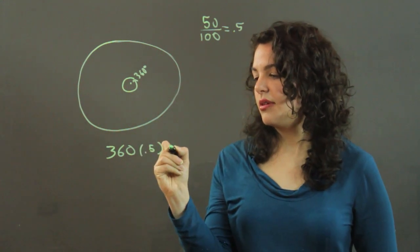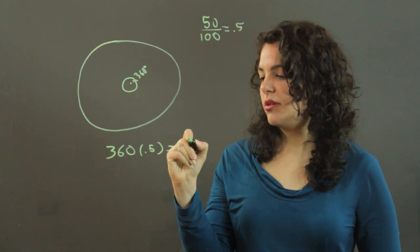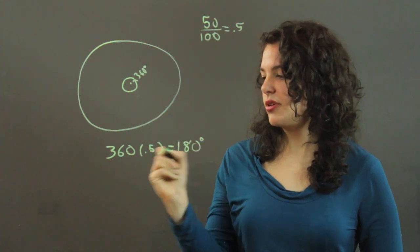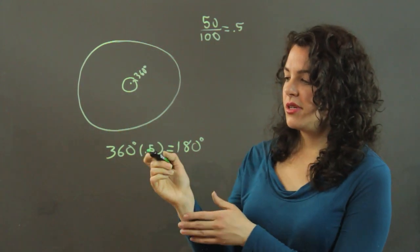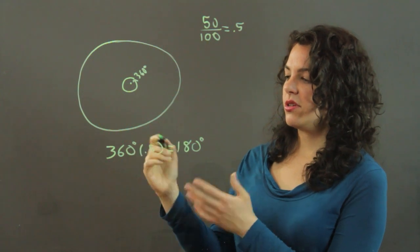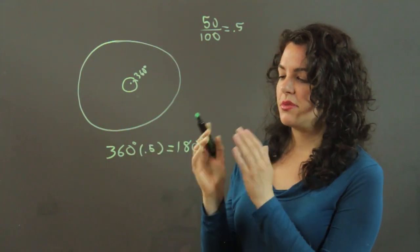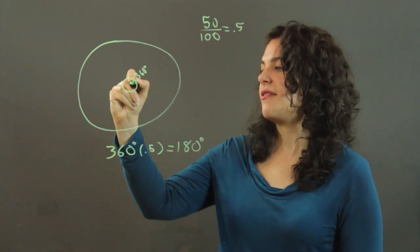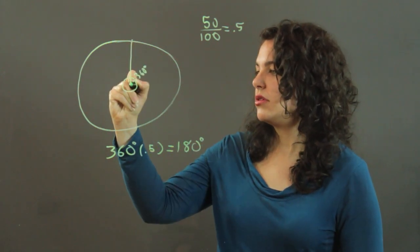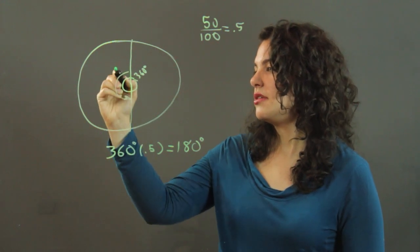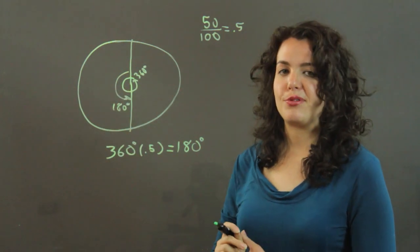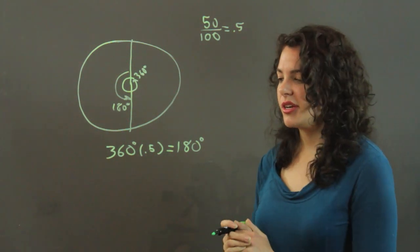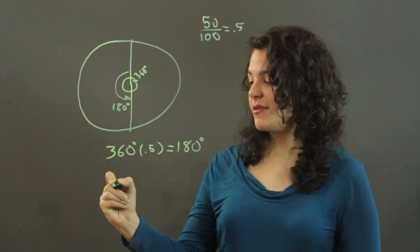So we get 180 degrees. So that's how I got 50% of my circle of 360 degrees gives me 180 degrees. So half of this circle is 180 degrees. That's my 50%. Just another quick example, if you have maybe 25%,